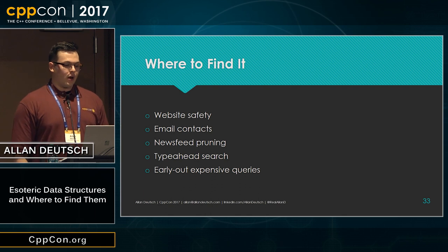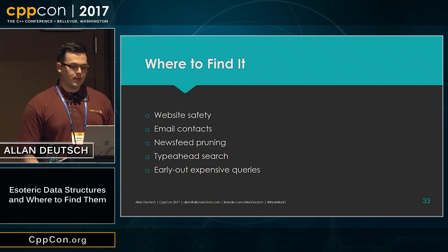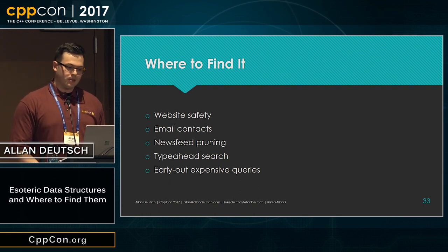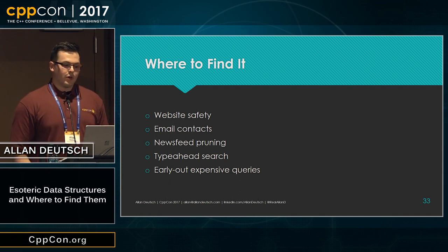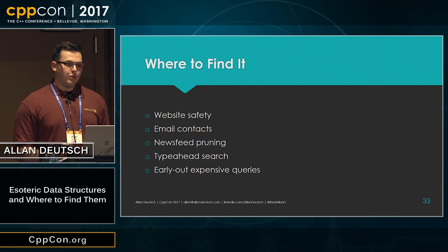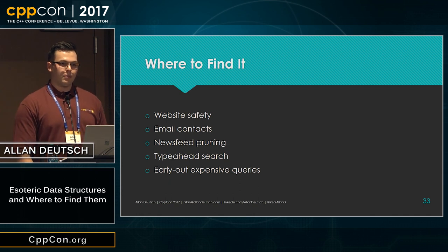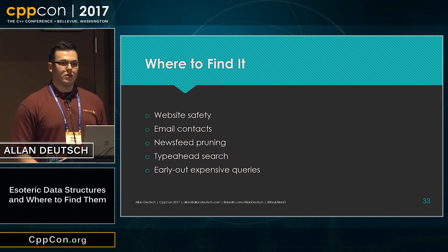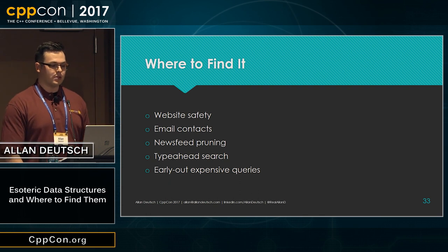Places you can find a bloom filter are in things like website safety, email contacts lists, newsfeed pruning, type-ahead search for looking for friends on Facebook, and even as an early out for expensive queries. For example, with the early-out use case, you would have a bloom filter representing your files on disk. Before doing the expensive file I/O operation, you query the bloom filter to see if the element is there. If it says no, you can be 100% certain the element really isn't on disk; if it says yes, there's a pretty good chance it is there, and then you go ahead and take that more expensive file I/O operation.